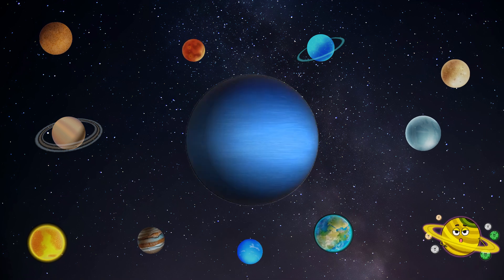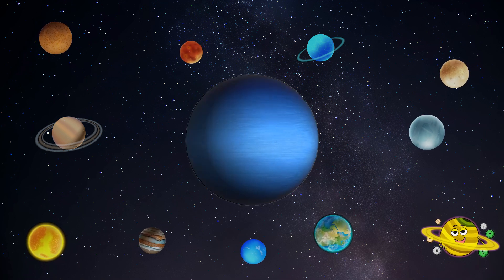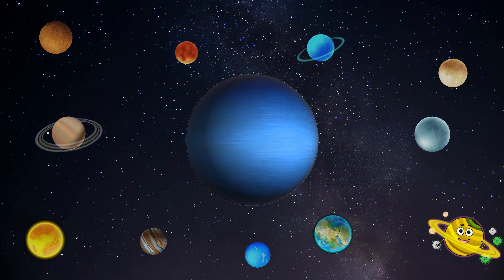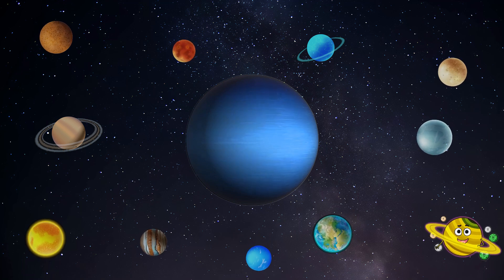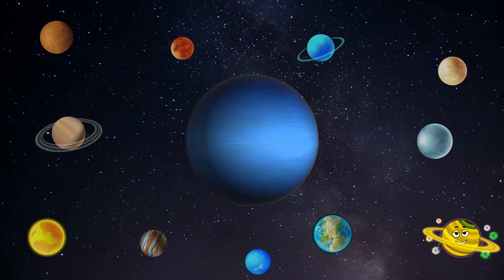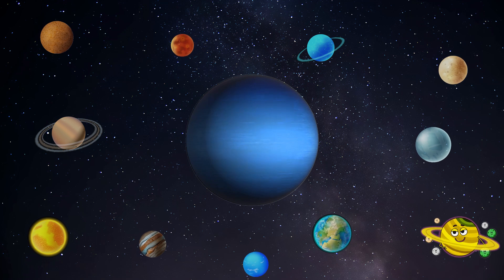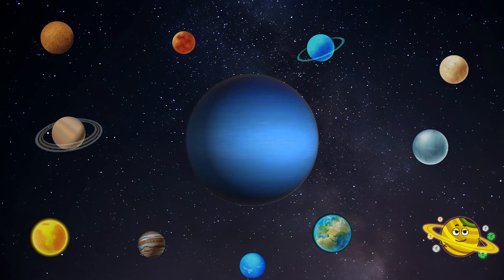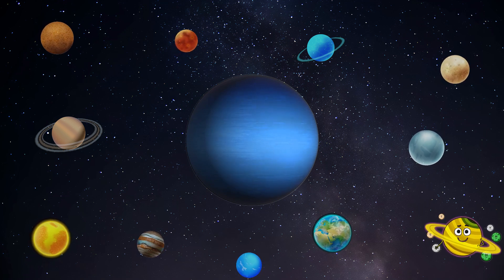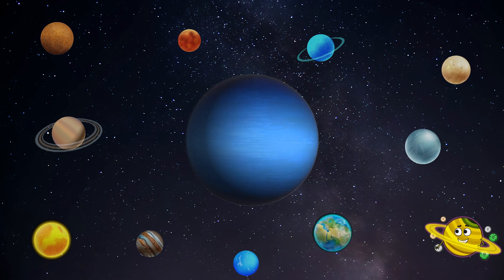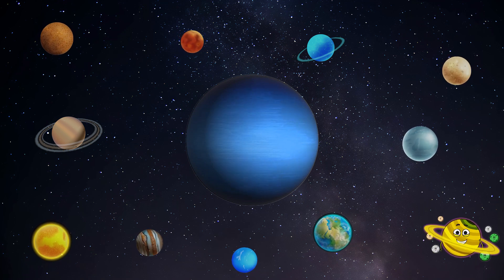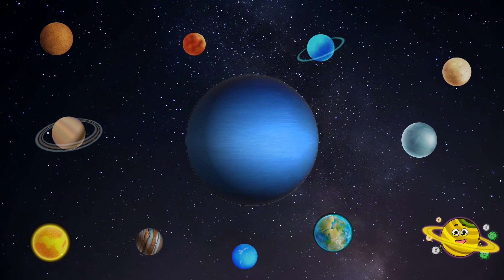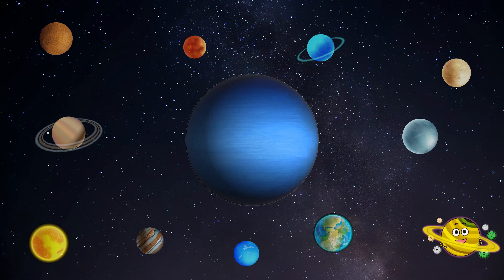Now we reach Neptune, the mysterious blue giant. Neptune is like a swirling blue whirlpool, with winds that howl like a spooky ghost. It's the farthest planet from the sun, but it's still full of surprises. Neptune has icy clouds and storms that dance in the darkness, inviting us to explore its icy depths and uncover its secrets.